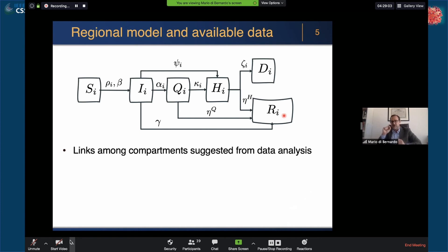This is the regional model. The links among the compartments that you see are the result of a data analysis, a system identification trial where we decided at the end to keep some of the links. It seemed from the data that these were the links that allowed us to capture what we were seeing in the data.